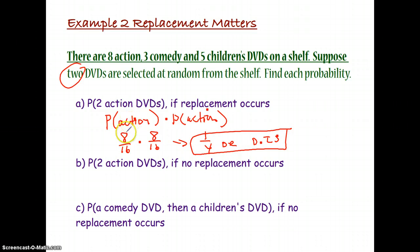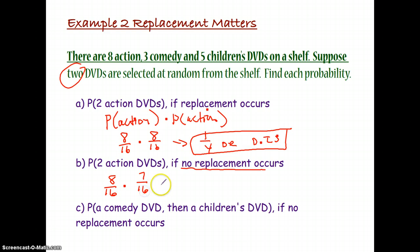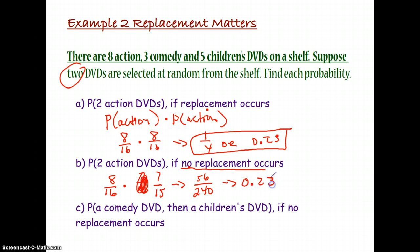Now if no replacement occurs: we still start with 8 out of 16 action DVDs, but if we select an action DVD first, that one is pulled out — so we only have 7 actions left out of 15 total DVDs. Both numbers go down by 1. We multiply 8/16 times 7/15 to get 56/240, which gives a probability of approximately 0.23 repeating.